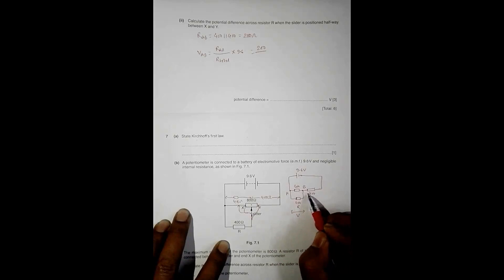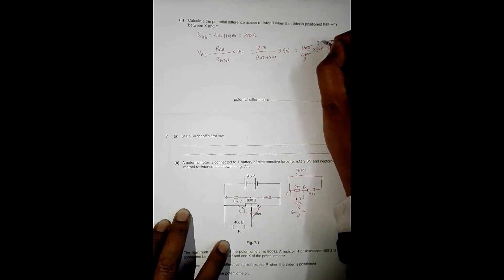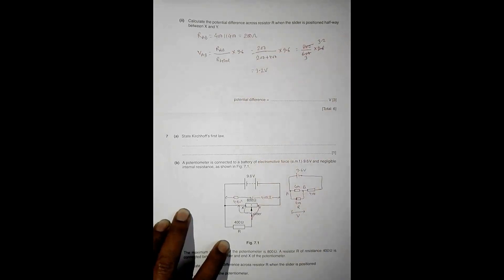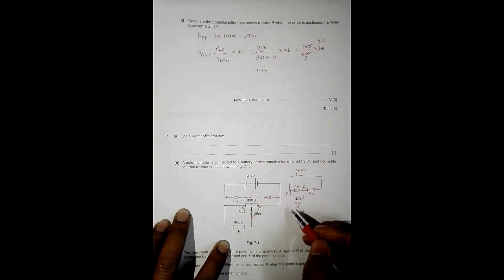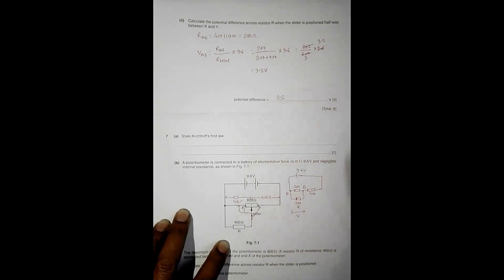That's equal to 200 by 600 into 9.6, so this threes up, so three threes are, into 9.6, so it is equal to 3.2 volts. So therefore the potential difference across the resistor R when it is halfway is equal to 3.2 volts. So this is the correct answer.